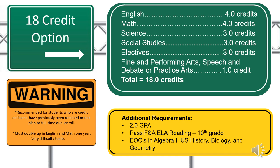The 18-credit option is recommended for students who are credit deficient and/or have been previously retained, or who do not plan to full-time dual enroll their junior and senior year at Northwest Florida or Emerald Coast Technical College. You must double up in English and math one year, which is difficult, so we cannot pursue this option without a meeting with myself or an administrator. The requirements are four credits of English, four credits of math, three credits of science, three credits of social science, three credits of electives, and one credit in either a fine or performing art, speech and debate, or practical arts. You must also have a 2.0 GPA, pass the FSA ELA reading in 10th grade, pass the Algebra I EOC, and take the U.S. History, Biology, and Geometry EOC.